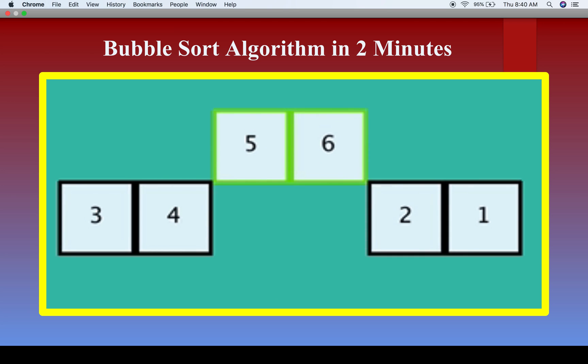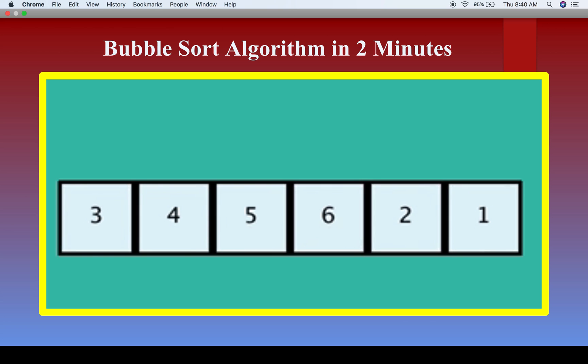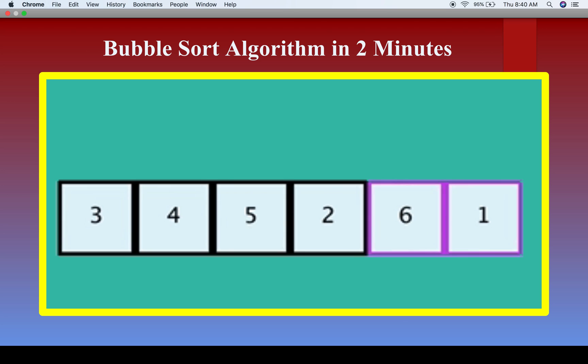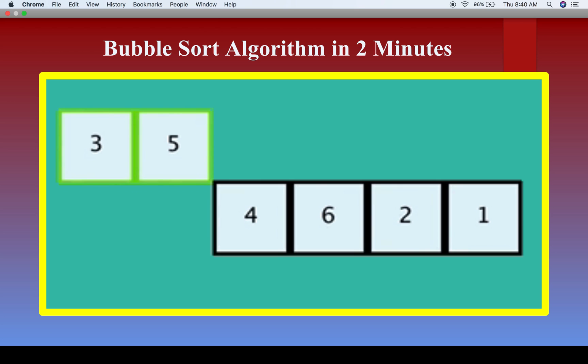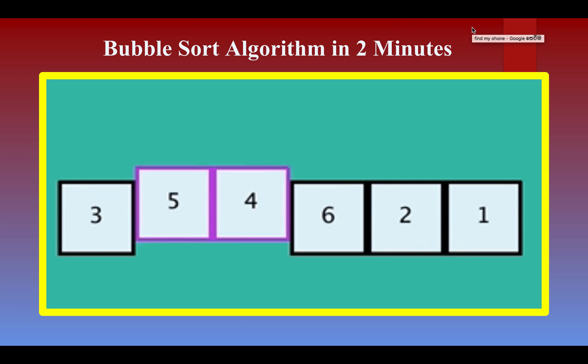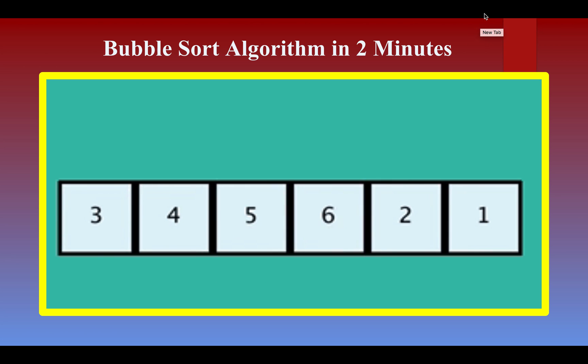So this one process is called one traversal. You have to do many traversals like that in order to sort the numbers. So here I am explaining only one traversal. The same process you have to do for all the traversals.